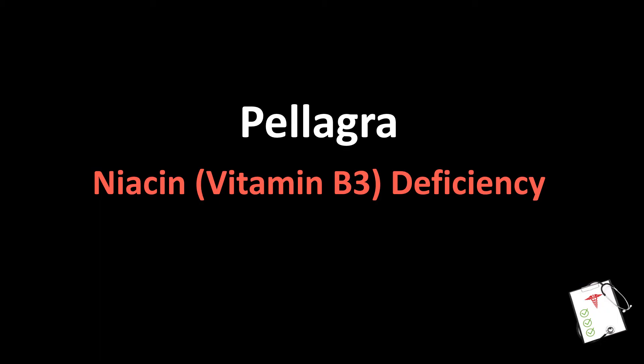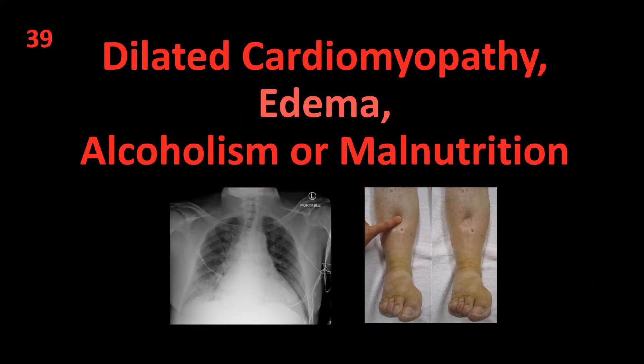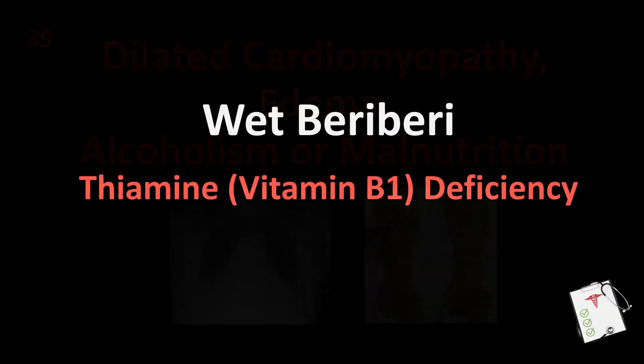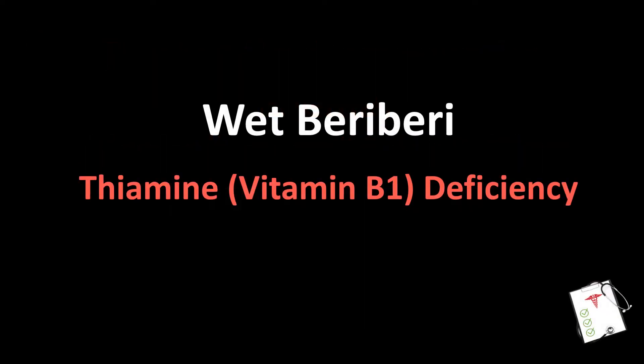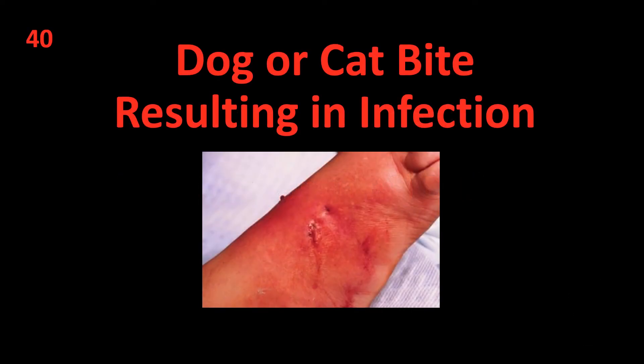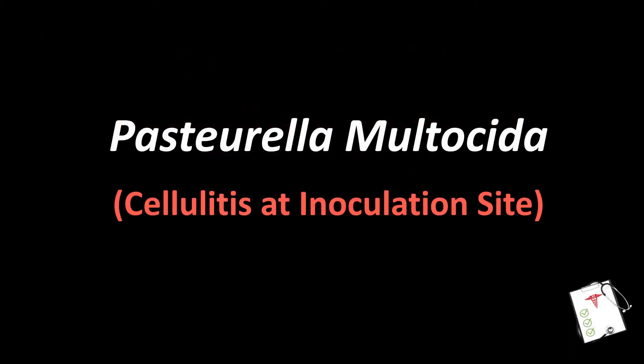Number 39 (also 40): Dilated cardiomyopathy, edema, alcoholism, or malnutrition. Answer: Wet beriberi — thiamine (vitamin B1) deficiency. Number 41: Dog or cat bite resulting in infection. Answer: Pasteurella multocida — cellulitis at inoculation site.